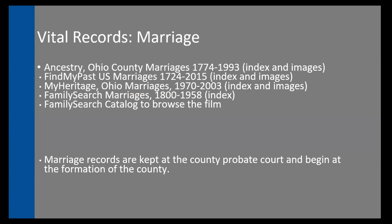There are a few databases to check for marriage records: Ancestry, MyHeritage, FindMyPast, and FamilySearch. It's always best to exhaust the online sources first, but if names have been badly misspelled or haven't been indexed well, you can check the FamilySearch catalog for the county you're researching and browse the film to locate the record. You can also contact the county probate court where the marriage took place — sometimes you can search marriage records on the probate court's website. For Ohio marriages, records usually begin at the formation of the county.